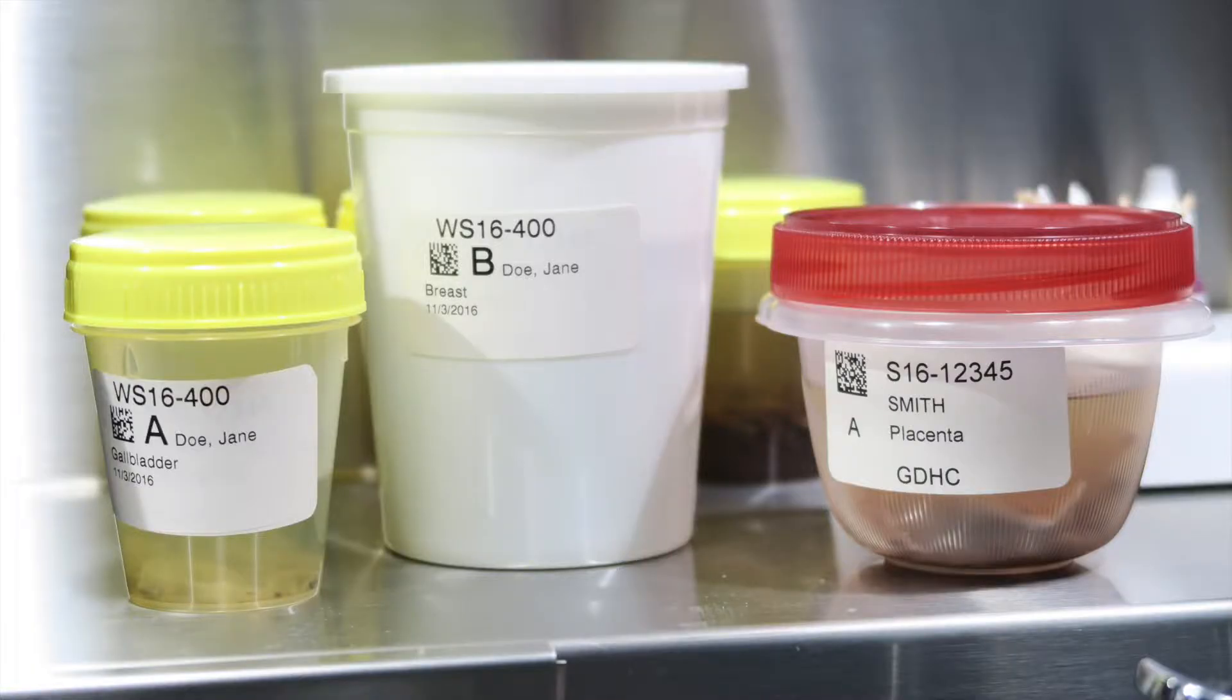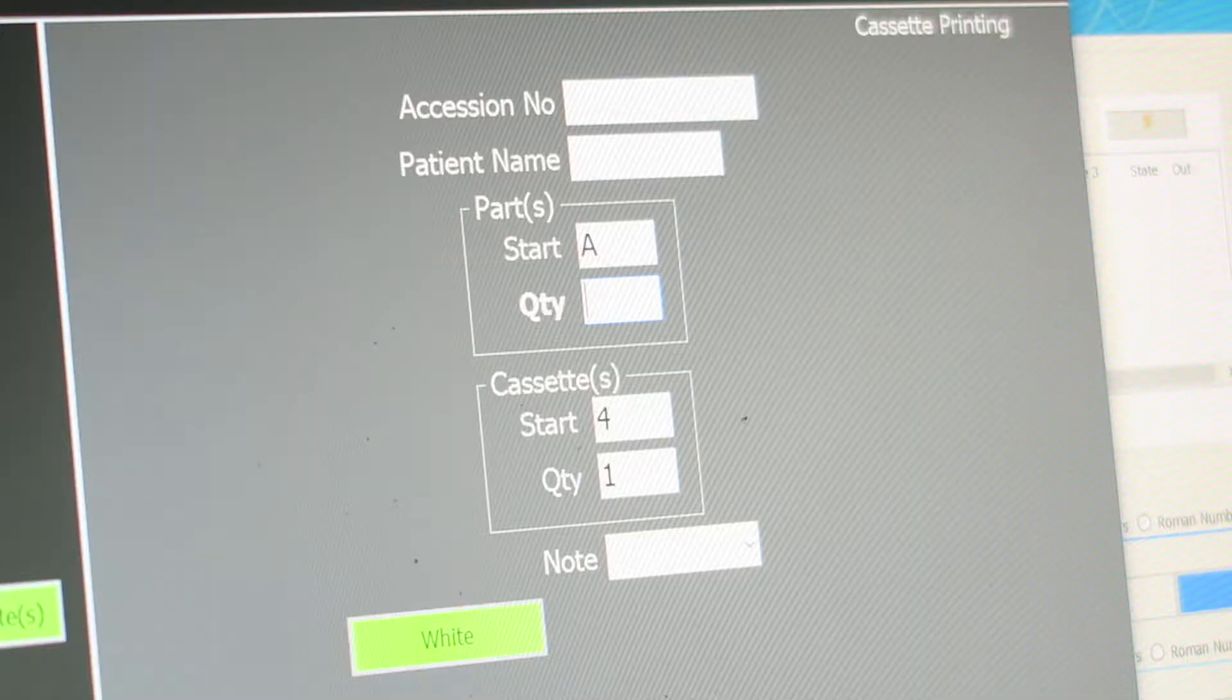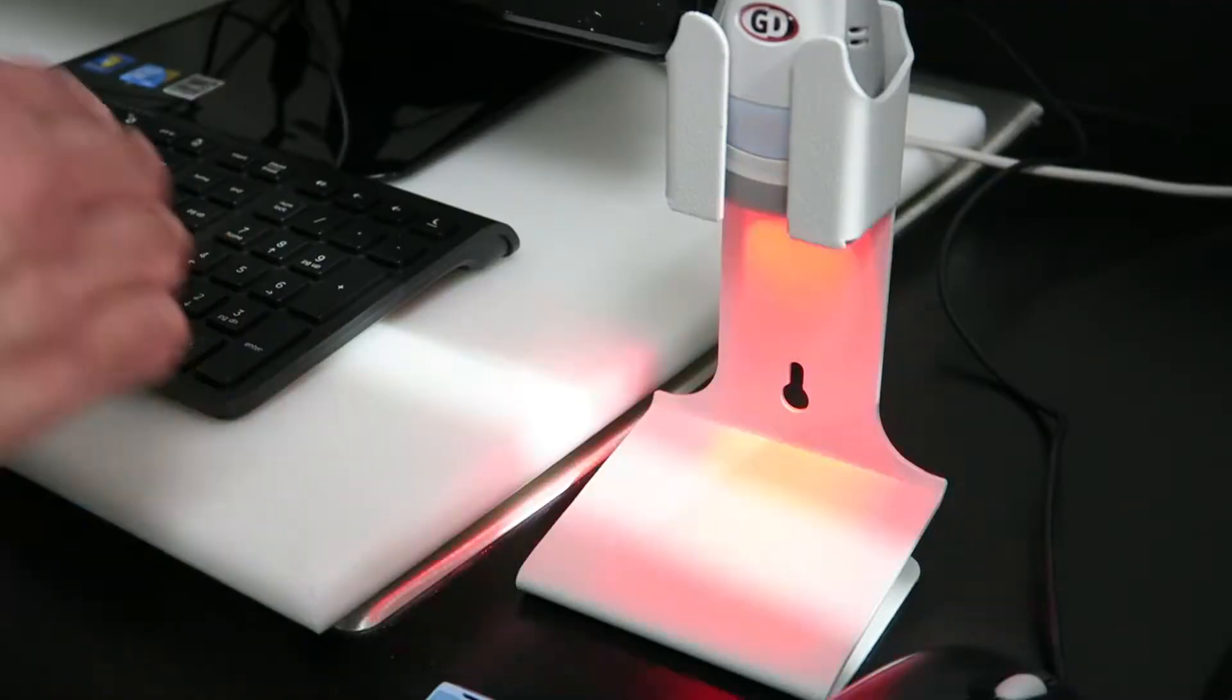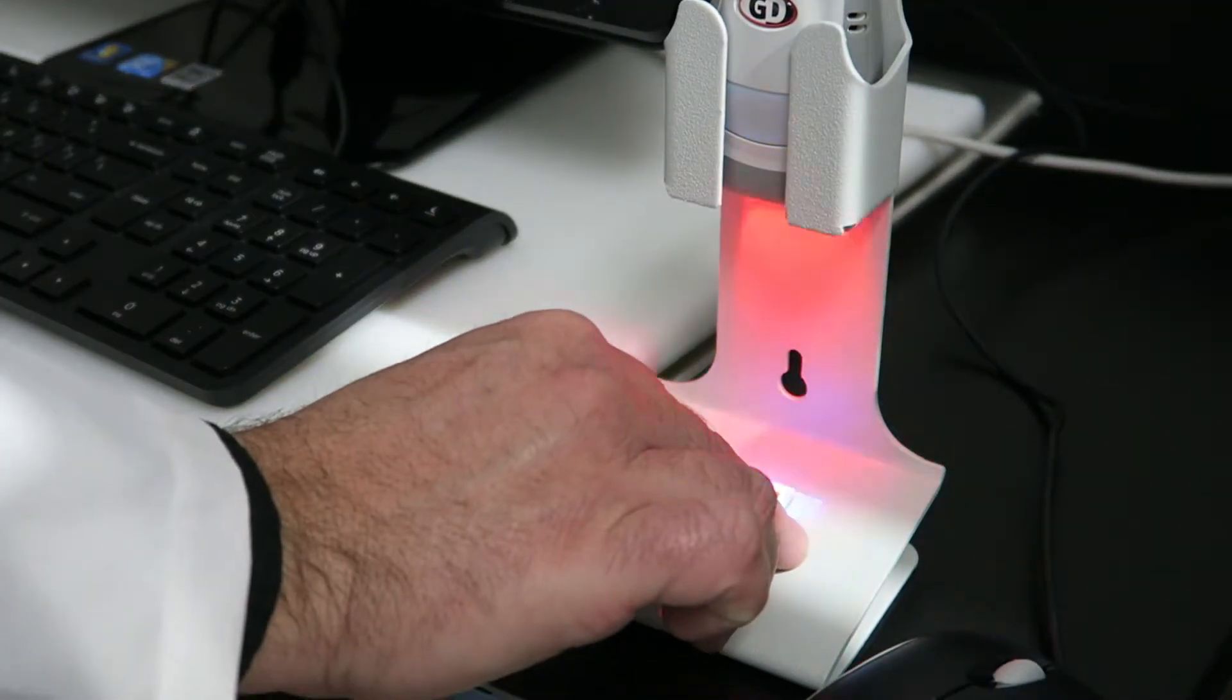Labs that use barcodes to identify and track tissue specimens can significantly increase productivity and eliminate errors. And if labs want to print barcodes on cassettes that will scan reliably and consistently, they must use laser printing technology.